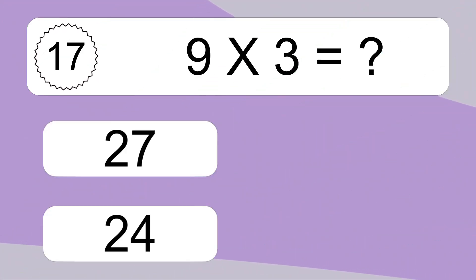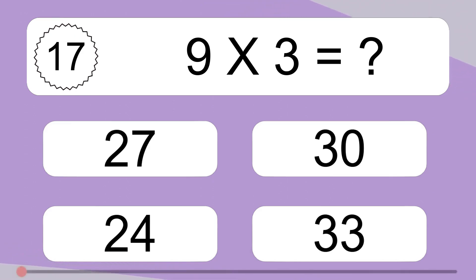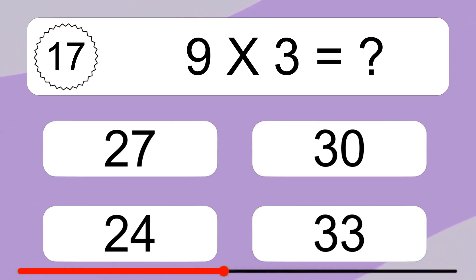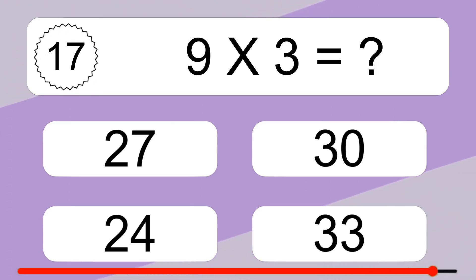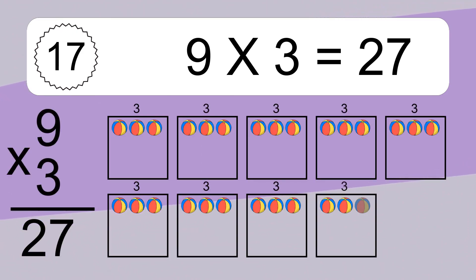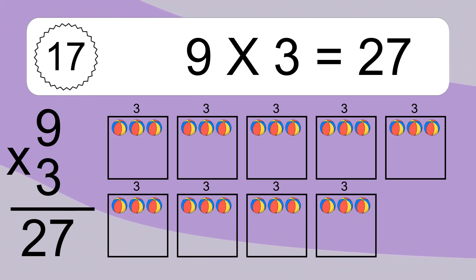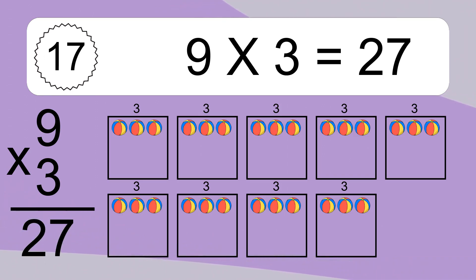9 x 3 equals what? 9 x 3 equals 27. We have 9 boxes and each box has 3 colorful balls inside. If you count all the balls in all the boxes together, you will have 9 x 3 balls. This equals 27 balls.